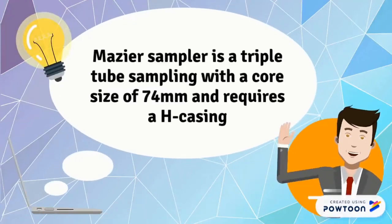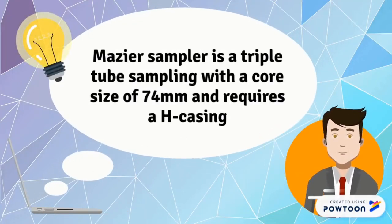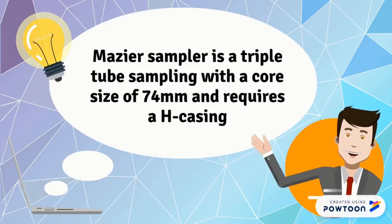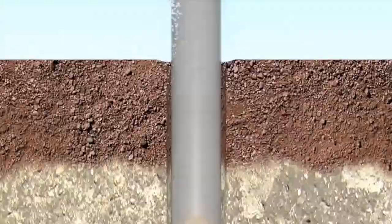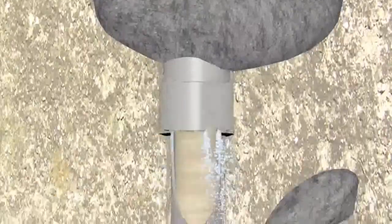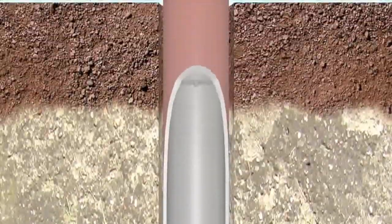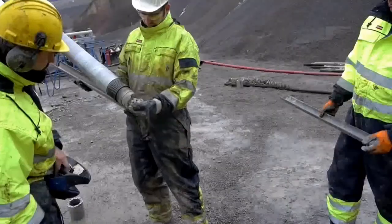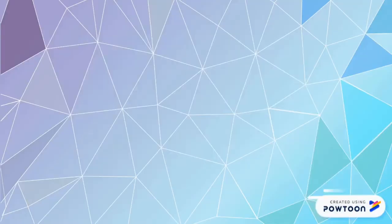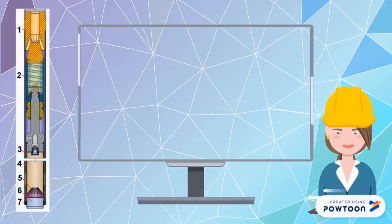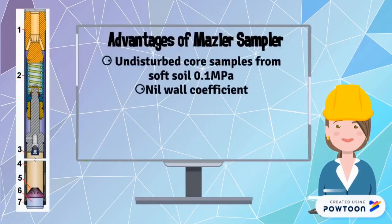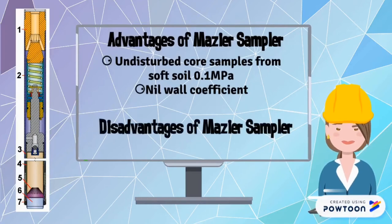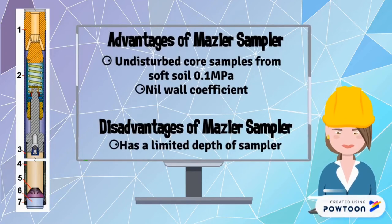The Mazier sampler is a triple tube sampler with a core size of 74mm and requires a hatch casing. The procedure involves lowering the triple tube sampler and pumping a flush fluid, then rotating and withdrawing the drill rods out of the hole. The advantages are undisturbed core samples from soft soils with a low area ratio. The disadvantage is that it has a limited depth of sampling.